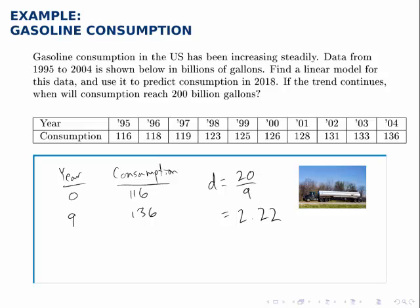Another way to calculate the growth rate is to notice that the full model will look like this: the consumption in year t will be 116 plus the growth rate times t. We know that in year 9, consumption equals 136. If we replace those, the only unknown is d. Solving for d by subtracting 116 and dividing by 9, you find that d is 2.22.